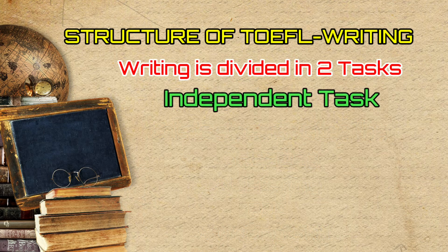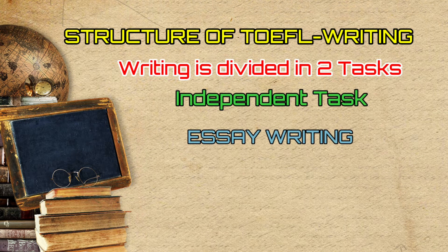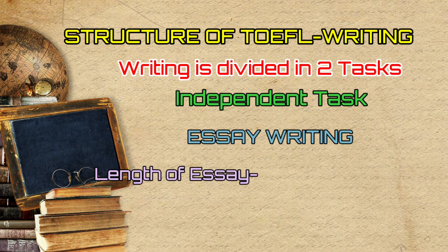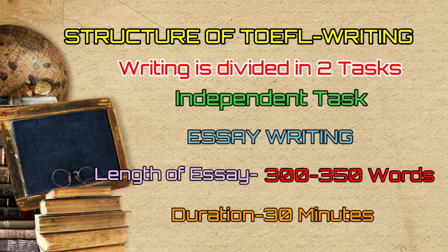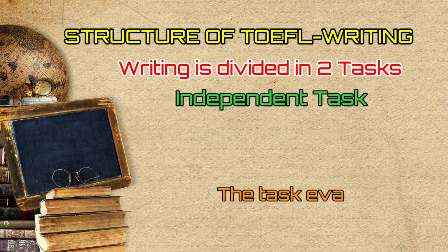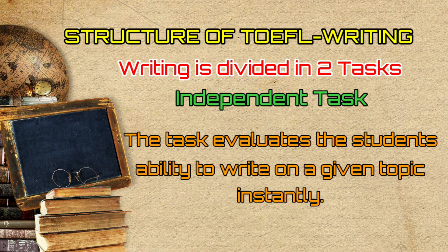The next writing task is the independent task. Here the candidate is expected to write an essay on the given topic. The word count should be between 300 to 350 words. The time limit to complete this task is 30 minutes. It measures the student's ability to write on a given topic instantly.